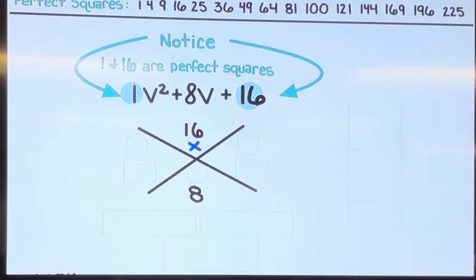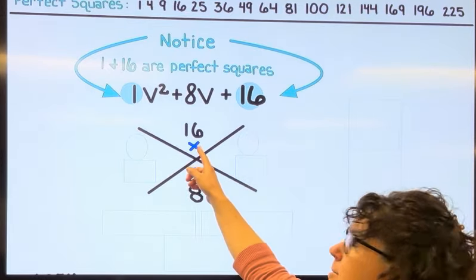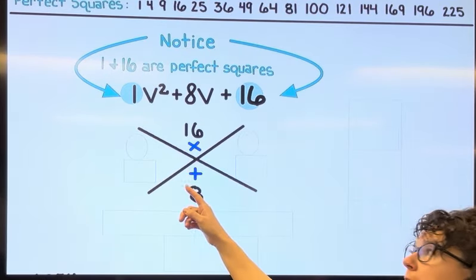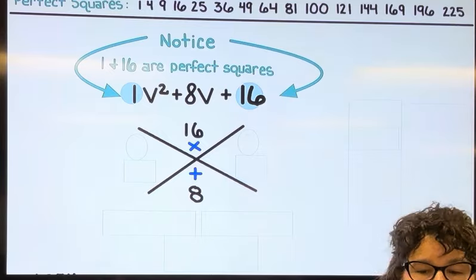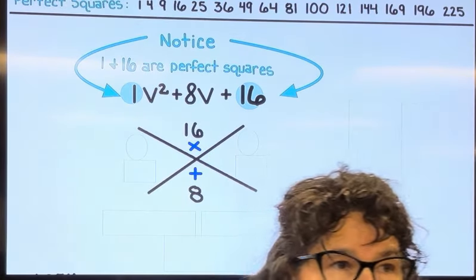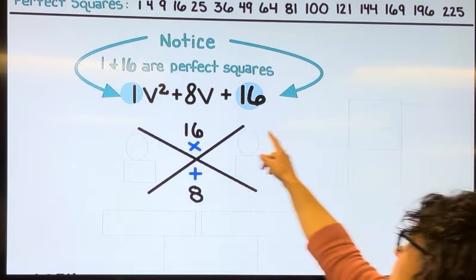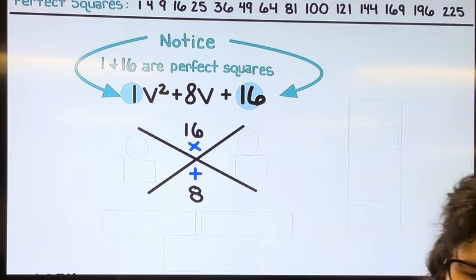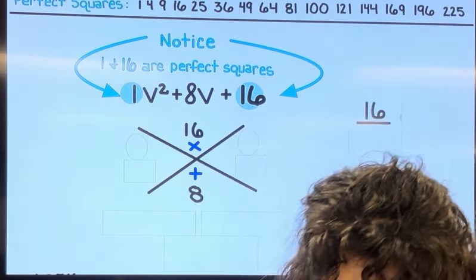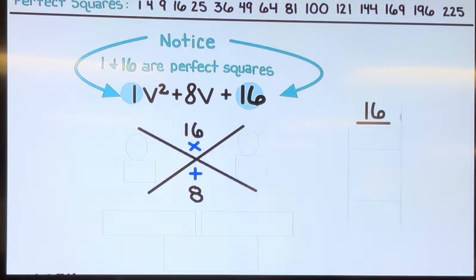We're trying to think of two numbers that when we multiply them together we get 16, and when we add them we get 8. So coming off to the side, we always grab the number up top here and set it off to the side, the positive version of it. So 16, but when I go to list, I can skip my normal process.